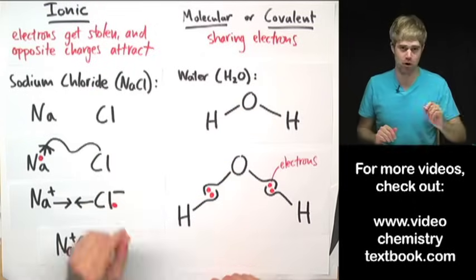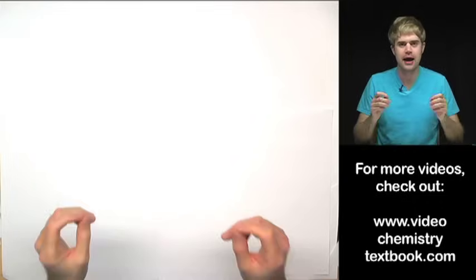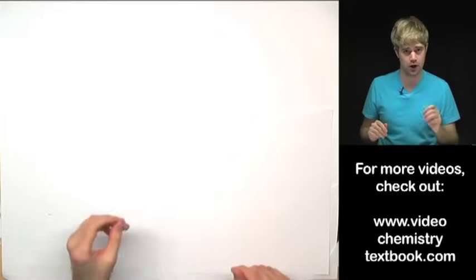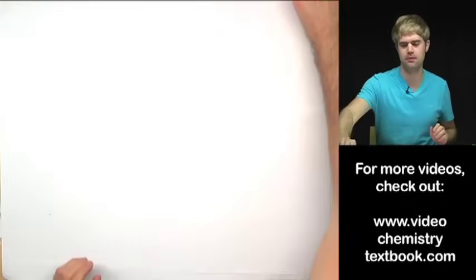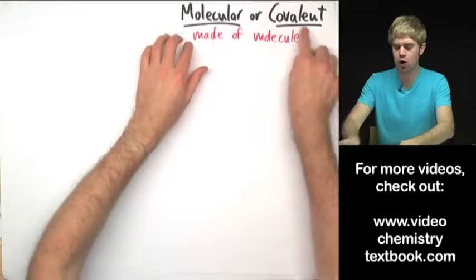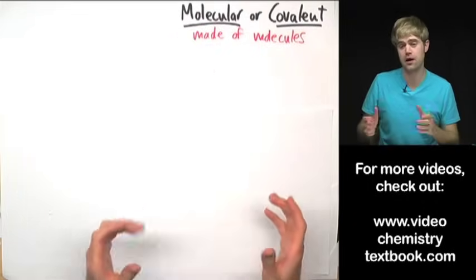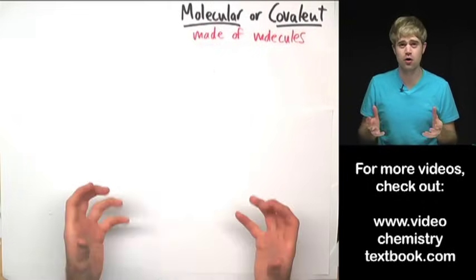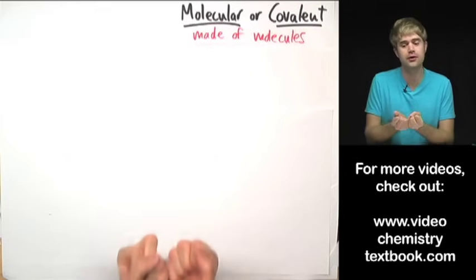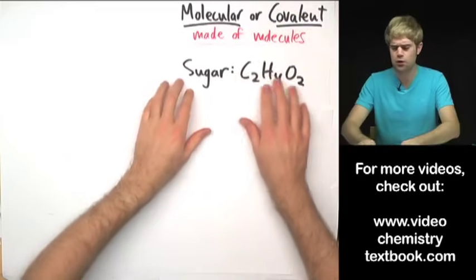Here is one more. Another big difference is how these compounds would actually look if we could see the atoms that make them up. Molecular or covalent compounds are made of molecules, which is a fancy word for a bunch of atoms that are stuck together in a clump. Here is what I mean.